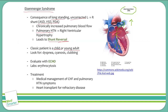What kind of symptoms are they going to have? Now we're dealing with the right-to-left shunt, which causes the patient to develop some cyanosis. They're also having poor oxygenation of the blood, so they're going to have dyspnea. And in response to poor O2 saturation, you'll see some clubbing in their digits as well.